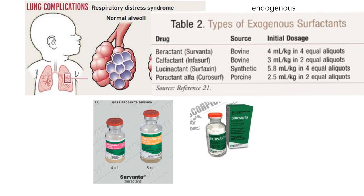Exogenous surfactant comes as a liquid. You wouldn't inject it IV or subcutaneously — it has to be put directly down the trachea and into the bronchi, so it enters the lumen of the alveoli. It must be administered very carefully with a specific technique. Looking at the source of these products: some are bovine — from cow — some are porcine — from pig — and some are synthetic. They extract surfactant from animal lung tissue, purify and sterilize it, and may add other components.